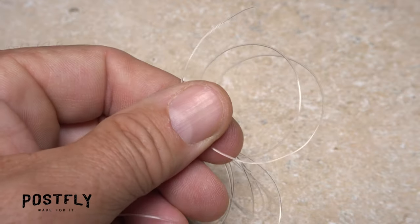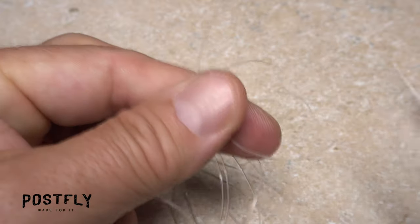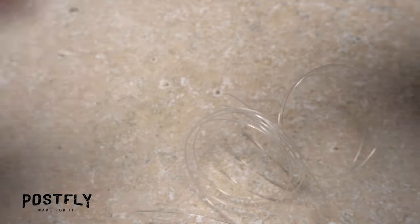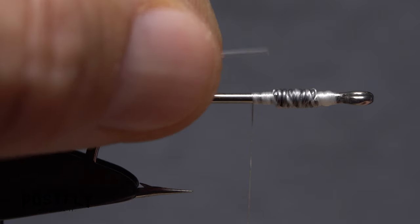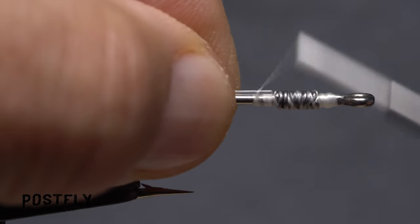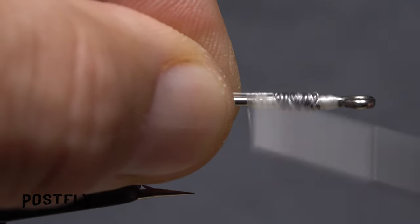Heavy monofilament fishing line is used to help prevent the wing of the fly from fouling in the hook bend. Snip off a two and a half inch length. Put one end of it against the wire wraps and take thread wraps to secure it to the top of the hook shank.